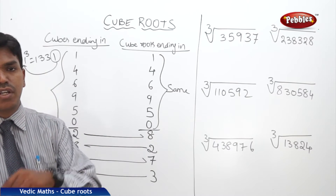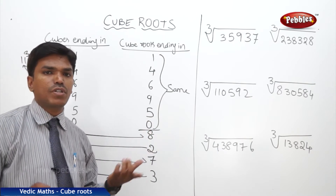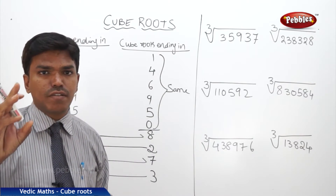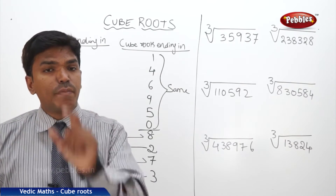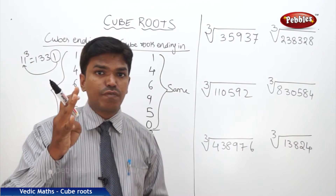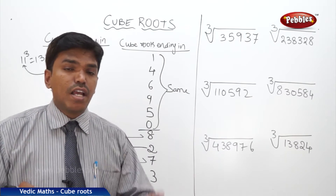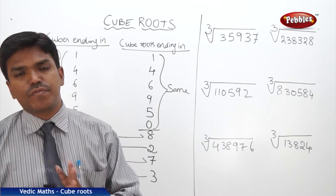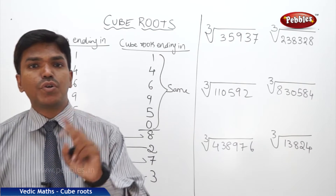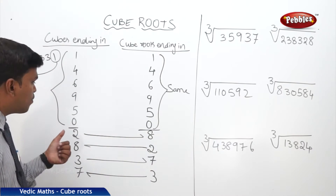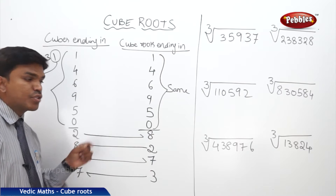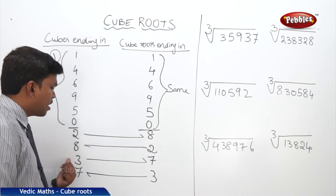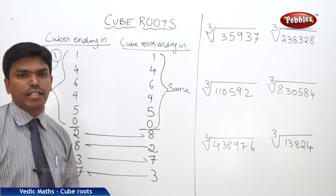So for digits 1, 4, 6, 9, 5, and 0, both the cube and the cube root end in the same digit. But for two digits it differs: if a cube number ends in 2, its cube root ends in 8, and vice versa. Similarly, 3 and 7 are swapped — if a cube ends in 3, the cube root ends in 7, and if it ends in 7, the cube root ends in 3.